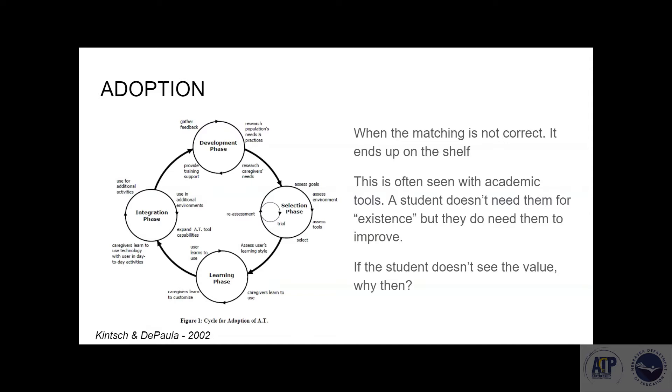I really like this graphic here because it does give some other definitions or indicators as to what each phase should allow us to do. In the selection phase, for example, it shows a nice trial, reassessing, did something work for us? These are very familiar to the QIAT indicators that we've discussed in Section 1.